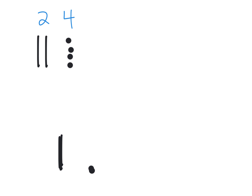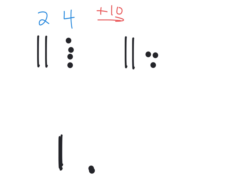Now if I wanted to show what ten more would look like, we'd first recreate that twenty-four — one, two, three, four — there's our recreation of twenty-four. And if I want to add ten more, I would simply drag in another ten, so there it is — there's our thirty-four.